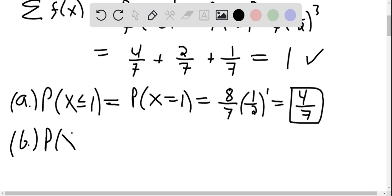On b, we want the probability that x is greater than 1. Now using our complement rule, this is 1 minus the probability that x is less than or equal to 1. And as we found on a, this means this is 1 minus 4 7ths. And so that's 3 7ths.